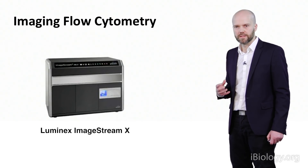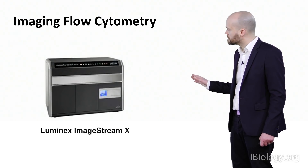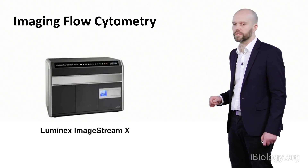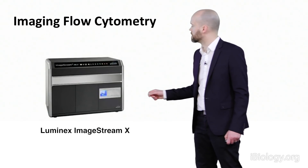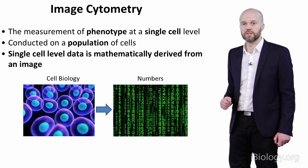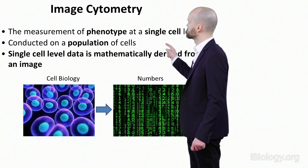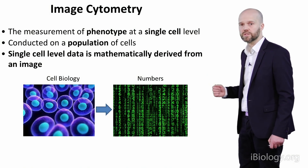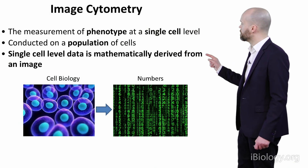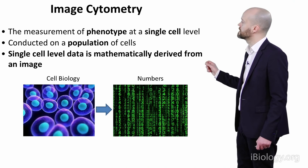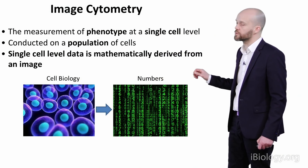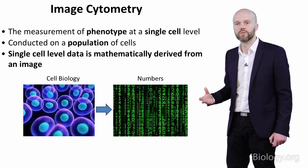Now let's talk specifically about imaging flow cytometry. At the time of recording this seminar, the only commercially available imaging flow cytometer is from a company originally called AMNIS, who developed a system called the ImageStream X, now owned by the Luminex Corporation. Imaging cytometry is the measurement of phenotype at a single cell level, at population scale, where the single cell level data is mathematically derived from a digital image — converting cell biology into numbers that include morphology and spatial context.